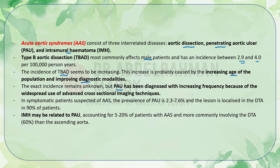Penetrating aortic ulcer has been diagnosed with increasing frequency due to widespread use of advanced cross-sectional imaging techniques. In symptomatic patients suspected of acute aortic syndrome, the prevalence of penetrating aortic ulcer is 2.3 to 7.6%, and the lesion is localized in the distal thoracic aorta in 90% of patients. Intramural hematoma accounts for 5 to 20% of patients with acute aortic syndrome and more commonly involves the distal thoracic aorta in 60% of patients.